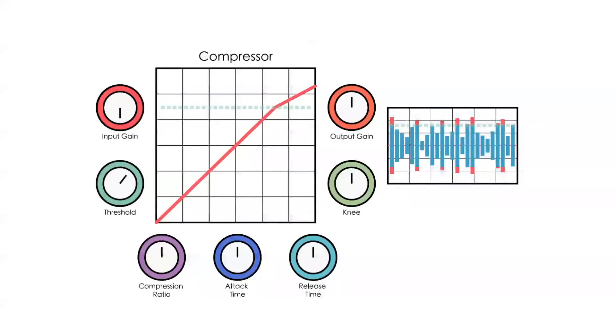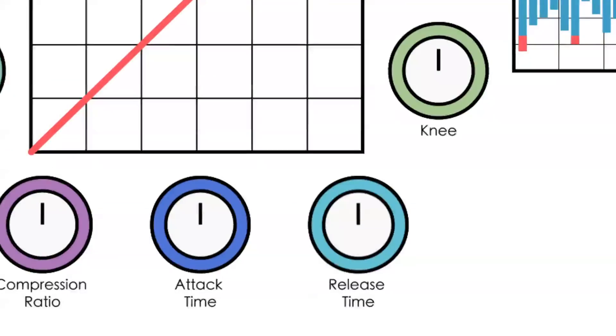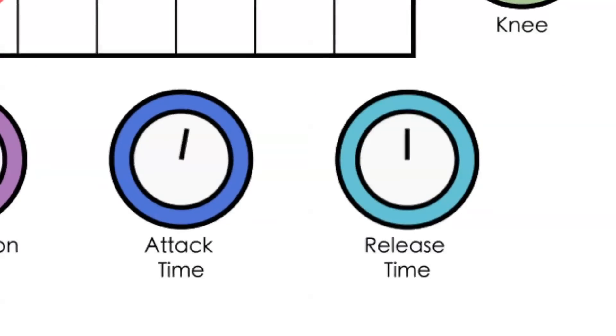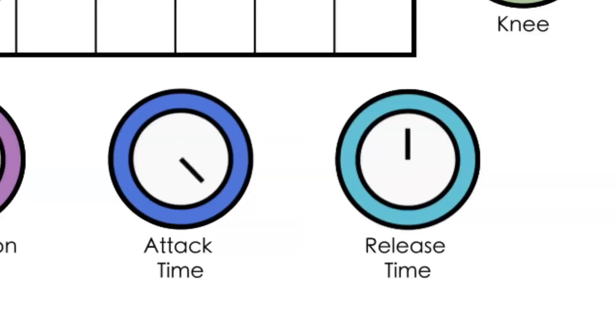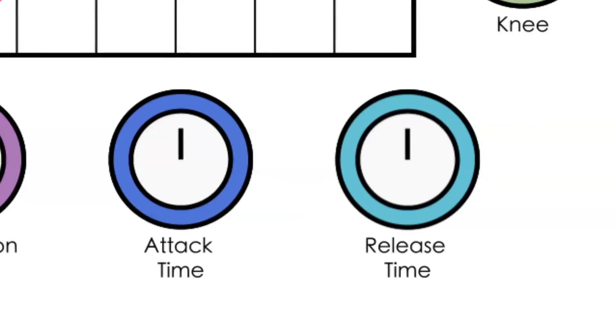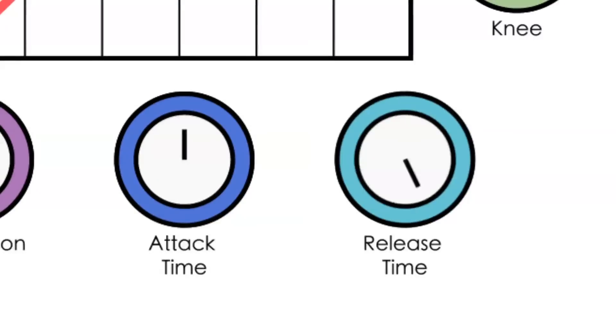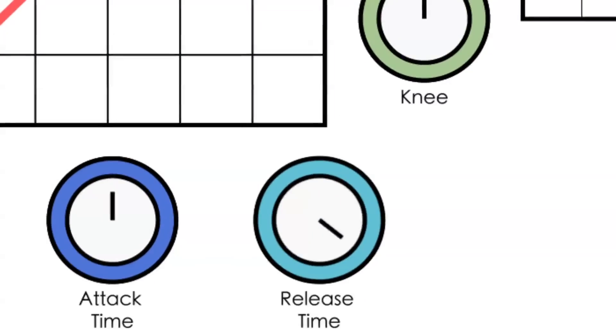The next two things to set are your attack and release time. The attack time controls how long it takes for the signal to become fully compressed after it passes the threshold. The release time is the exact opposite and controls how long it takes for the signal to fully decompress after it drops below the threshold.